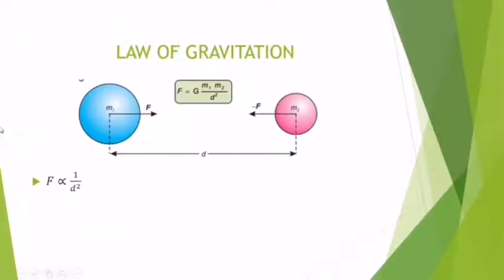F is inversely proportional to the square of the distance between their centers. It means that when the distance between the centers is small, the force of gravitation is greater.